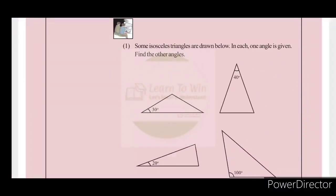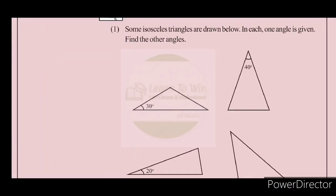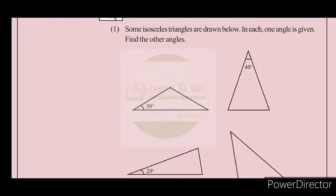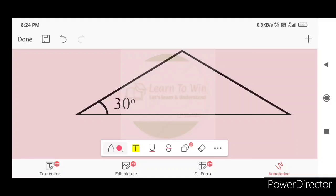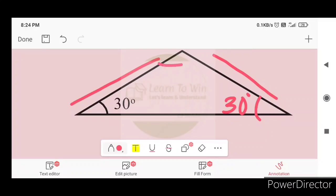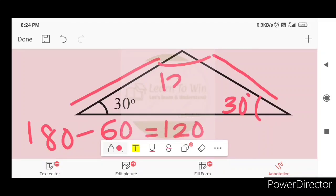Some isosceles triangles are drawn below. In each one, an angle is given — find the other angles. If you look at the angles, the opposite angle is equal to 50. The opposite angle is E. In each other angle, the angles are 50 and 60. 180 minus 60 gives 120 degrees. That means this angle is 30 degrees and this angle is 120 degrees.